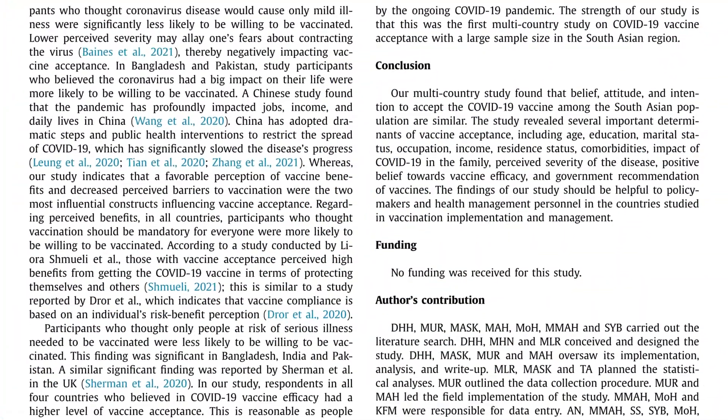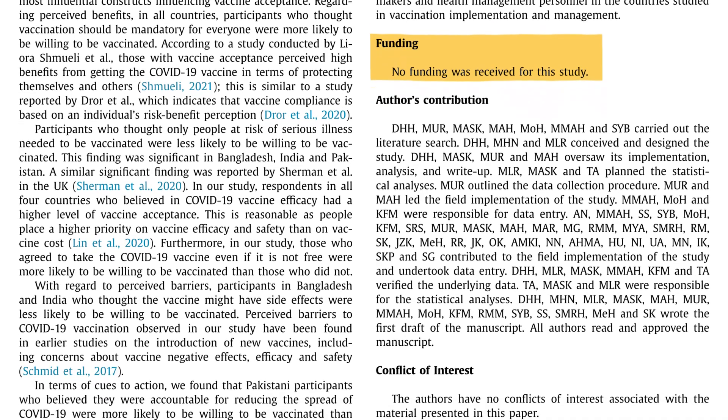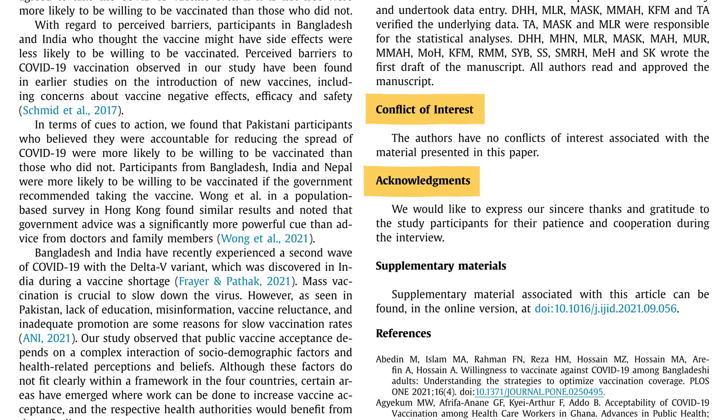After conclusion, the next section is funding — you report whether you received funding from a government or private organization and give the name of that organization. Then there are author contributions, conflict of interest, acknowledgements, and supplementary material. In the supplementary material section, you provide raw data, pictures, or whatever you could not report directly in the research paper.